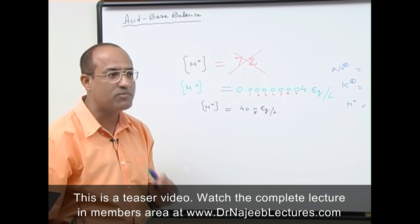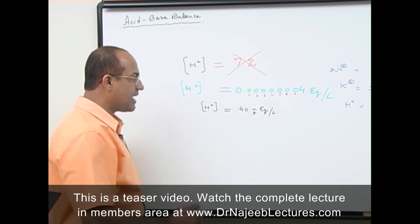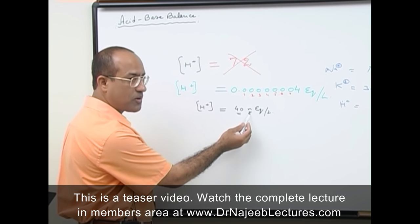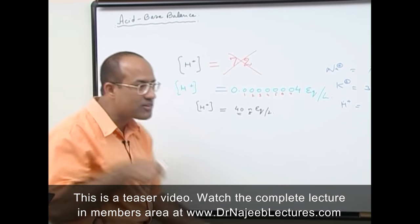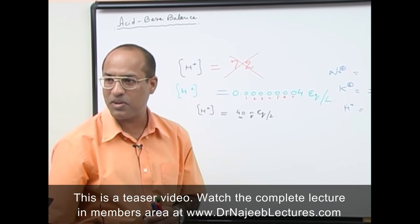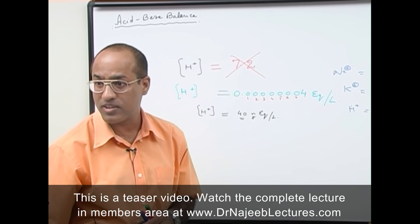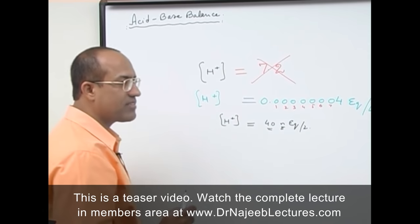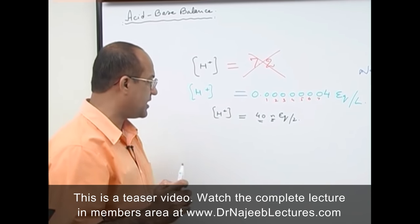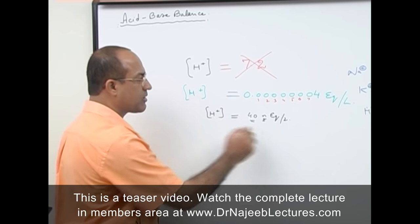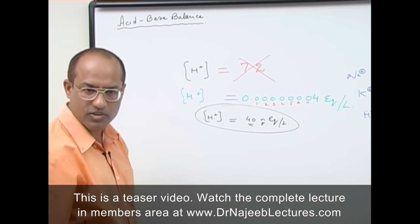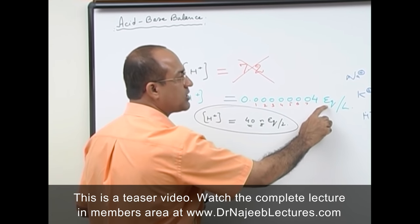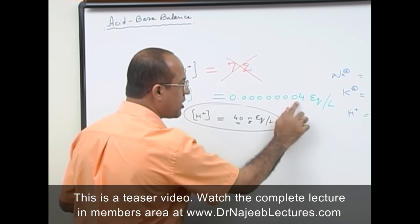If you mistakenly say a patient has a proton concentration of 40 milli-equivalents per liter, you are describing a dead body that has been pumped with acid, because a normal living body cannot develop that high a proton concentration. The key point from the very beginning: hydrogen ions are present in a very very small amount in extracellular fluid — just 40 nano-equivalents per liter.